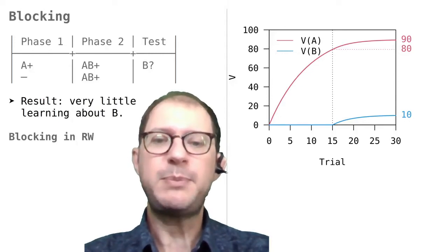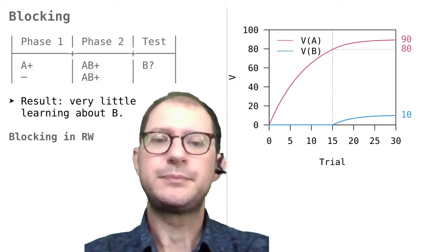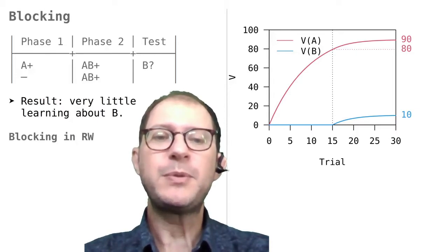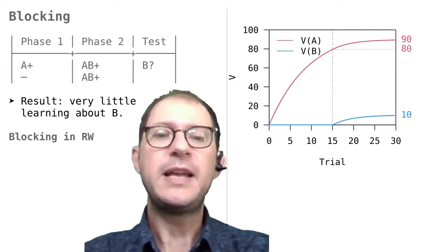In summary, RW attributes the blocking effect to the fact that when B is introduced, there is little error left to correct, and so little learning goes on from that point on.